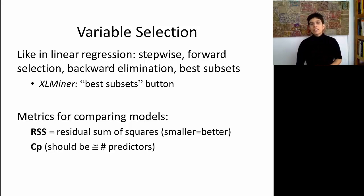Remember stepwise and forward selection and backward elimination? All those techniques are also available in logistic regression. In XLMiner, you'll again see a best subsets button. Here, the metrics for choosing predictive models will be slightly different than in linear regression. In particular, we did talk about CP earlier on, and CP again should be approximately equal to the number of predictors. So we can use CP in this case as well. The other measure that we'll use is called residual sum of squares, and the smaller it is, the better it is. Remember that variable selection will only tell you which is the best, say, pair of predictors, or which is the best triplet of predictors. But it doesn't tell you whether that particular pair is indeed good. It's just better than all the other pairs.